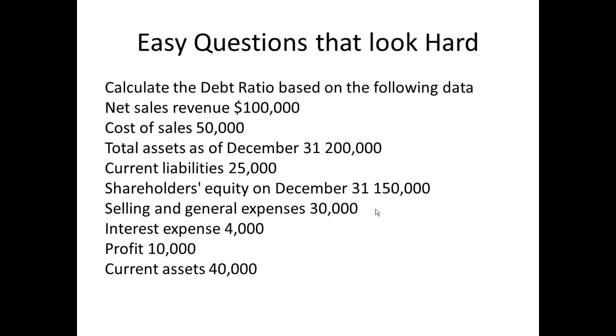Now let's do an easy question with the accounting equation that first off looks hard. And you might be given something that says calculate the debt ratio using the following data. So first thing you need to know is what is the debt ratio. And the debt ratio is what percentage of the assets are funded by debt. How do we work this out? Well it's our liabilities divided by our total assets. That's the debt ratio. So now we need to work out what are our liabilities and what are our total assets. Nothing else is relevant.